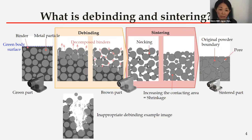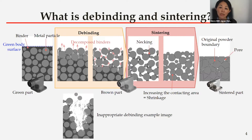Importantly, during the debinding the shrinkage is not seen — the metal powder location is not changed. The debinding temperature is much lower than the diffusion temperature, which is normally 80 percent or higher of the melting point of the metal. For example, stainless steel 316L, which is one of the most common materials used in the MIM sector, has a melting point of around 1370 degrees Celsius.